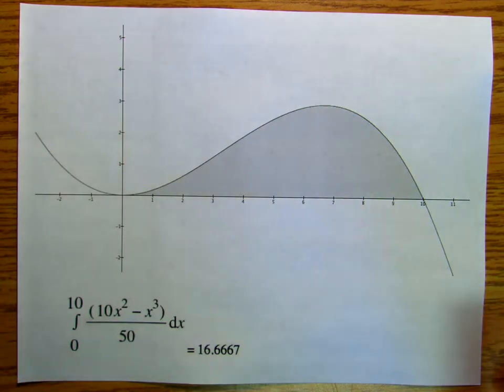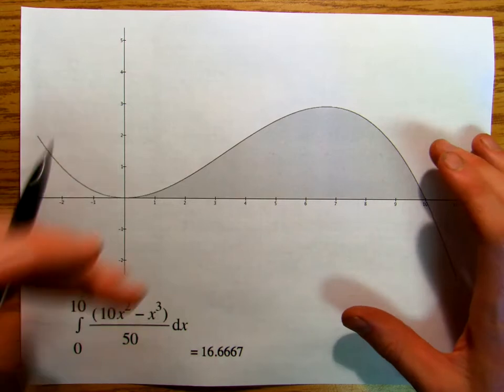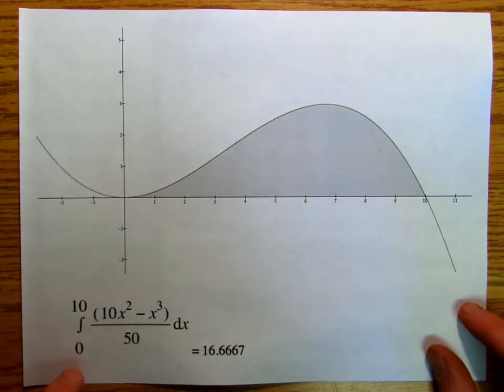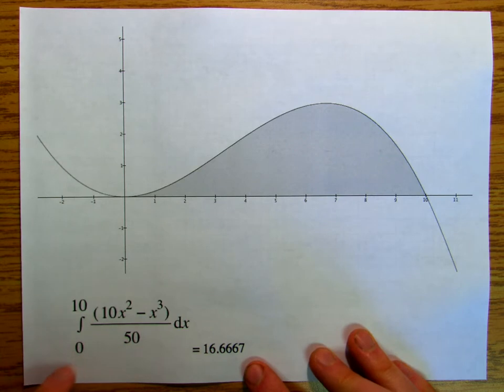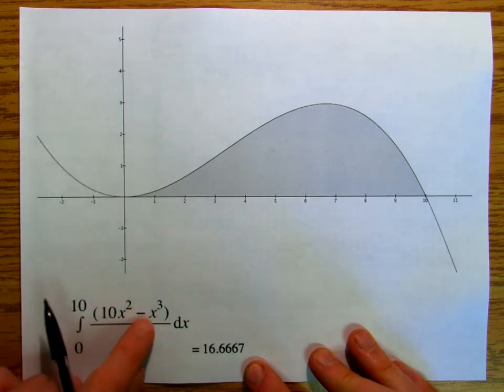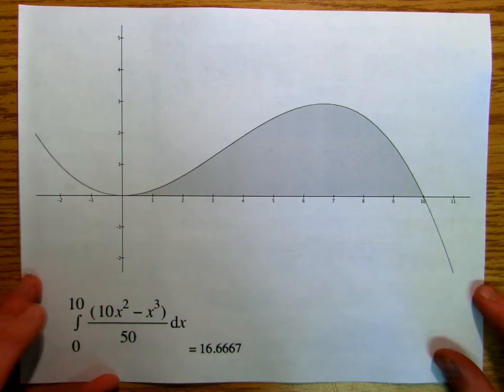And so this is something that you should really do yourself. You really ought to do it yourself. So what I did is I printed out something from a previous video. So if you watched one of my previous videos, we found that the integral from 0 to 10 of 10x squared minus x cubed over 50 is 16 and 2 thirds, 16.666.